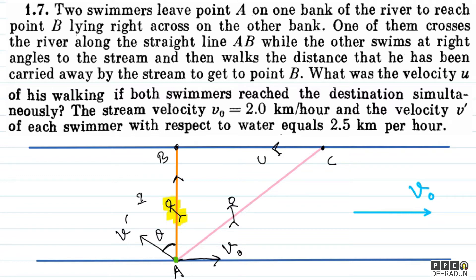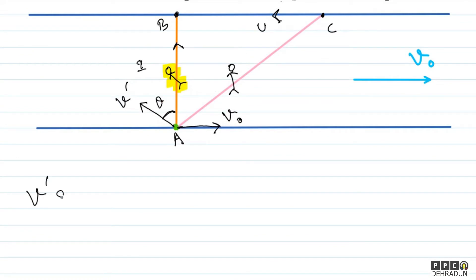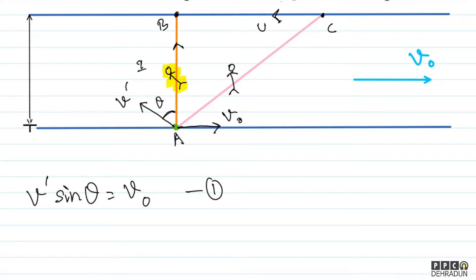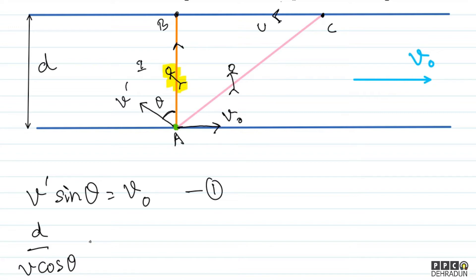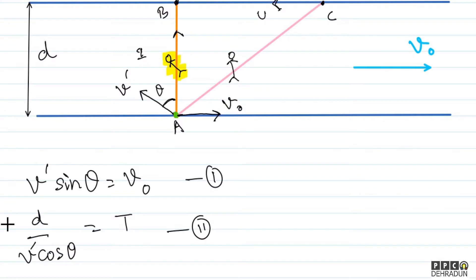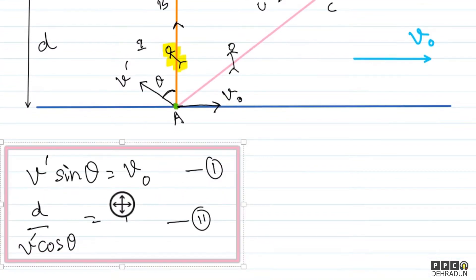तो पहले swimmer के लिए हम लोग लिख सकते हैं: V' sinθ = V₀ — यह एक equation हो गई। साथ ही river की width को D मान लेते हैं, तो उसे A से B जाने में time लगेगा D divided by V' cosθ, क्योंकि V' का cosθ component AB के along है। तो T = D / (V' cosθ) — यह पहले swimmer के लिए equations हैं।